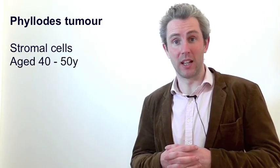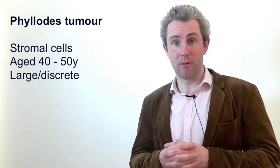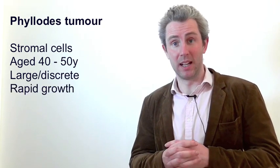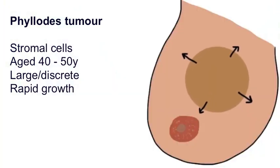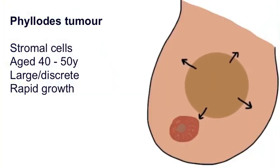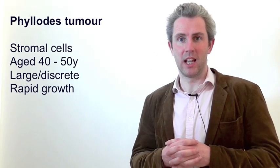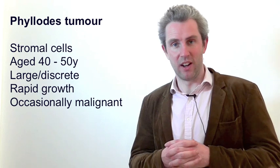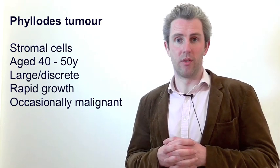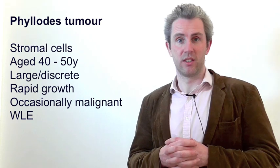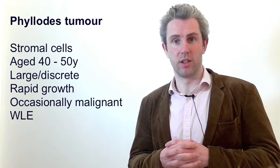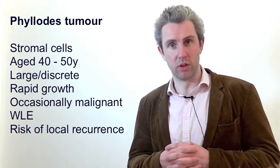Phylloides tumours are derived from interlobular stromal tissue and tend to present in pre-menopausal women between 40 and 50 as a large, firm, well-circumscribed mass. They can grow rapidly and occasionally become malignant. On examination a phylloides tumour tends to be firm, non-tender, mobile and discrete — much like a fibroadenoma. Malignant lesions tend to spread haematogenously to the lungs, mediastinum and bone. Treatment is wide local excision with a wide margin of normal tissue, as there is a high risk of local recurrence.